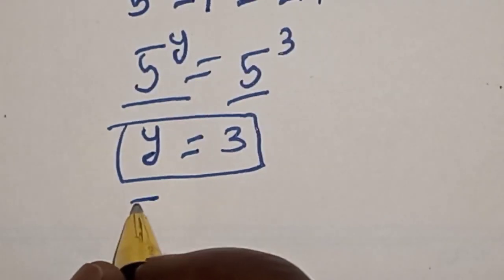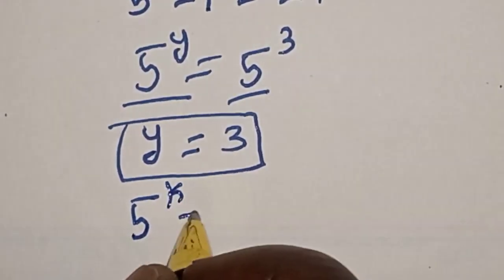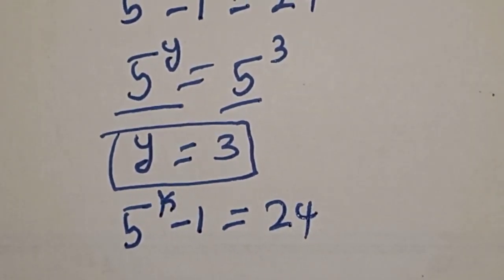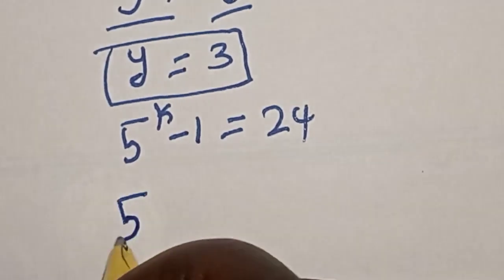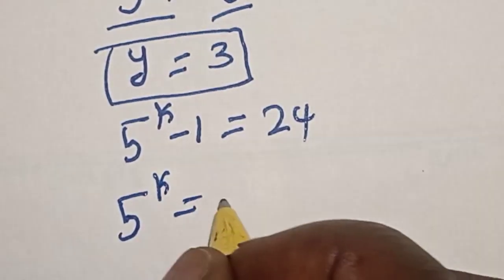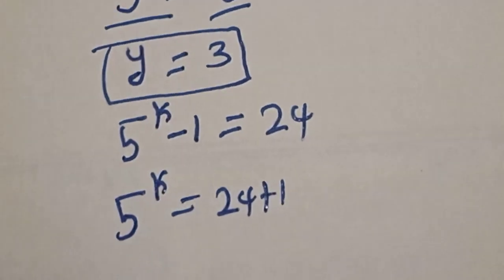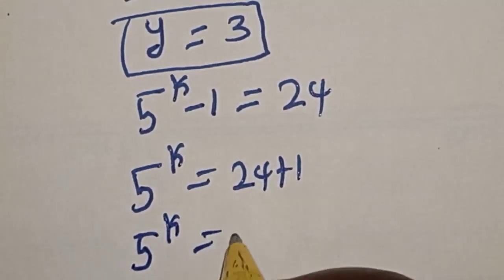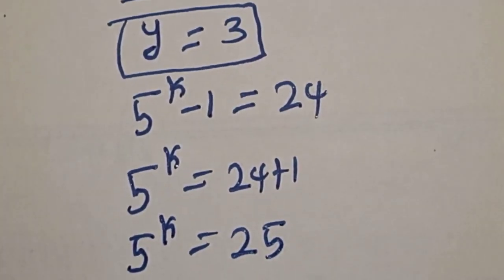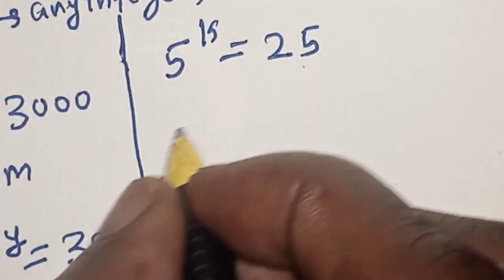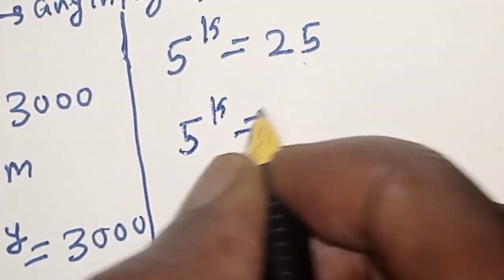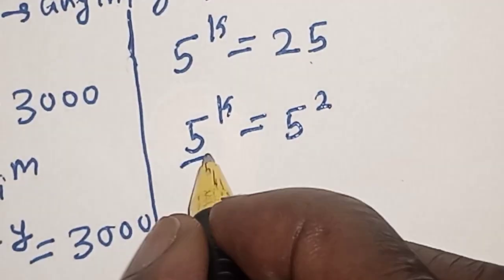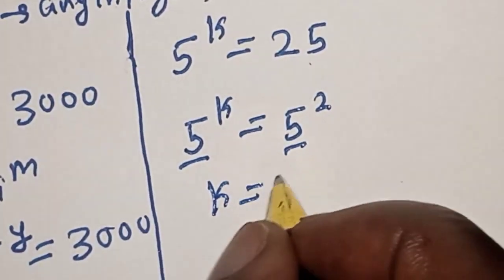From equation 2, we have 5 raised to power k minus 1 equals 24. Adding 1 to both sides gives 5 raised to power k equals 25. Now 25 is 5 squared, so 5 raised to power k equals 5 raised to power 2. Since they have the same base, k equals 2.